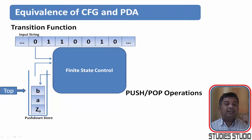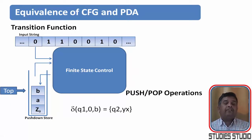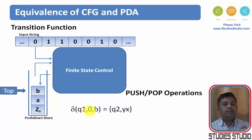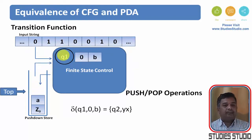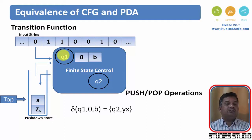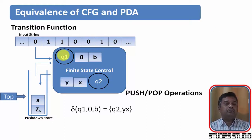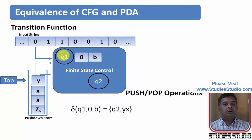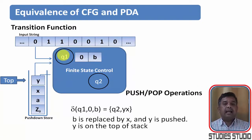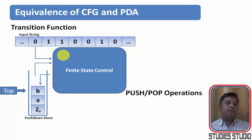Let us recall how transitions work in a pushdown automata. If the transition is delta(Q1, 0, B) = (Q2, Y, X), then Q1 is the current state, 0 is the input symbol read, B is popped from the stack, Q2 is the new state, and X and Y are pushed — X is pushed first and then Y, so Y ends up on the top of the stack. So B is replaced by X, and Y is on top.